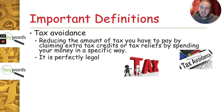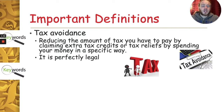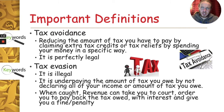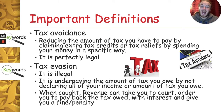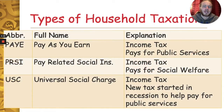Two things that are important: tax avoidance and tax evasion. Tax avoidance is perfectly legal and perfectly fine — it's where you reduce the amount of tax you have to pay by claiming extra tax credits or tax reliefs by spending your money in a specific way. Tax evasion, however, is the opposite; it's illegal. That's underpaying the amount of tax you owe by not declaring all your income or the amount of tax you owe to the Revenue Commissioners. When you're caught by the Revenue, they're going to take you to court and you'll have to pay back the amount owed with interest, and they'll probably give you a fine or a penalty as well. Tax avoidance? Completely fine. Tax evasion? No.